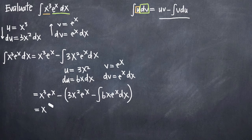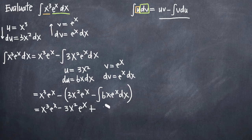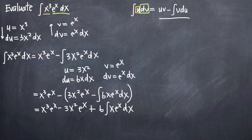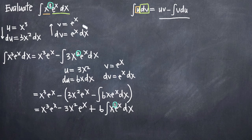When we simplify this, we get x cubed e to the x minus 3x squared e to the x — the two negative signs cancel and give us a positive. We can pull the 6 out in front of our integral as a constant coefficient, giving us plus 6 times the integral of x e to the x dx. Notice the trend: we started with a third degree power function, used integration by parts and reduced it to second degree, and now we essentially have x to the first power — a first degree power function. So we've gone from degree 3 to 2 to 1.